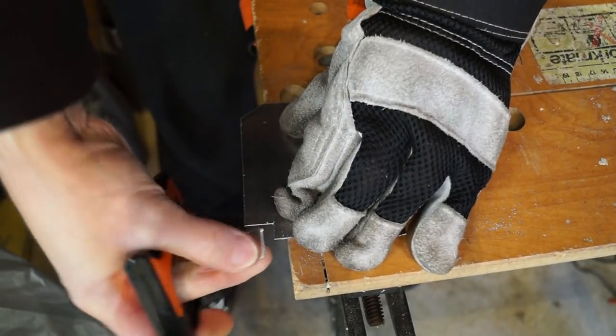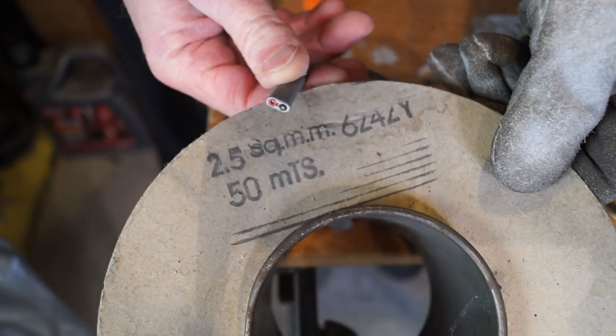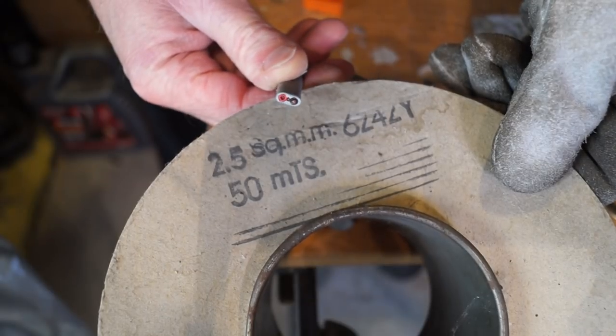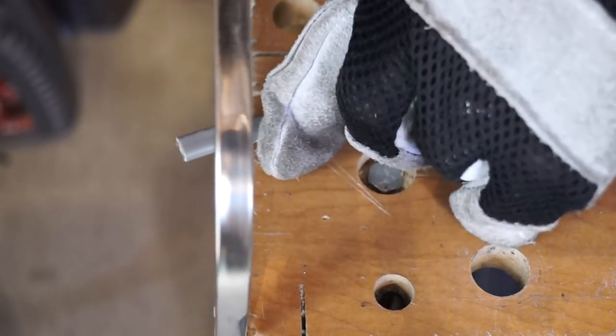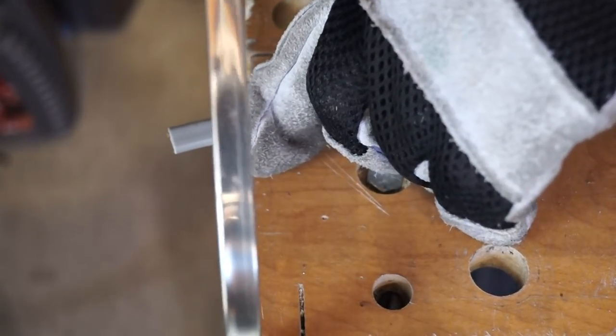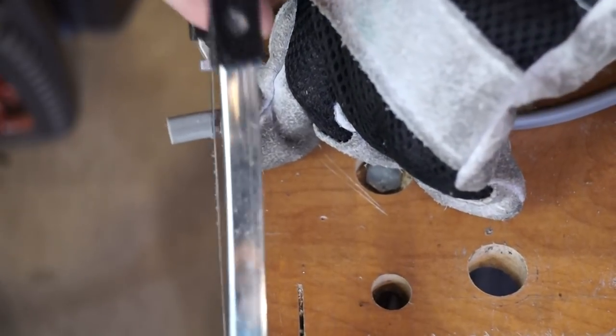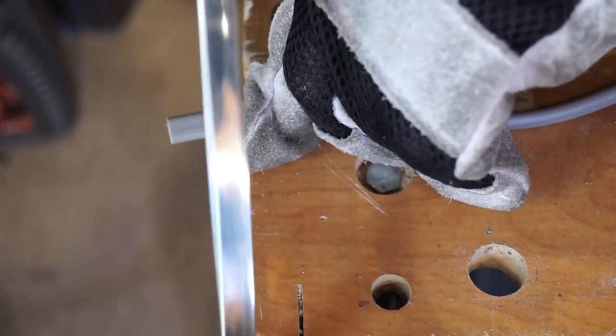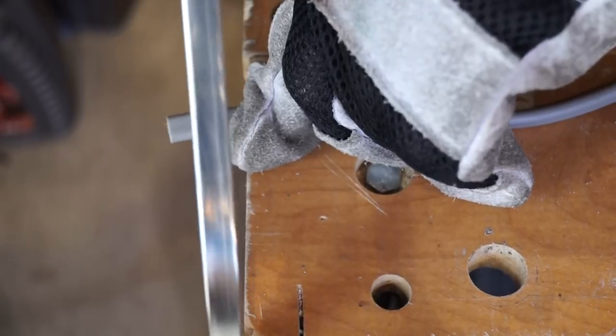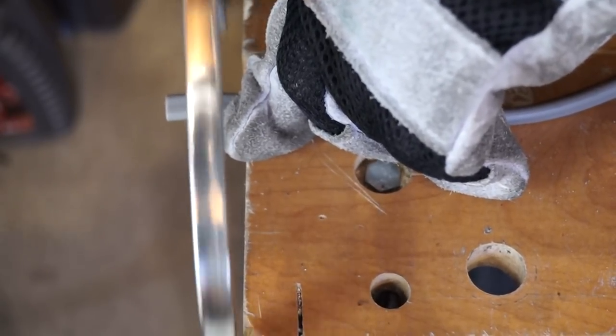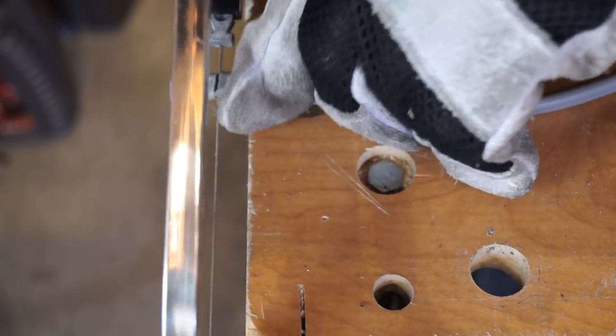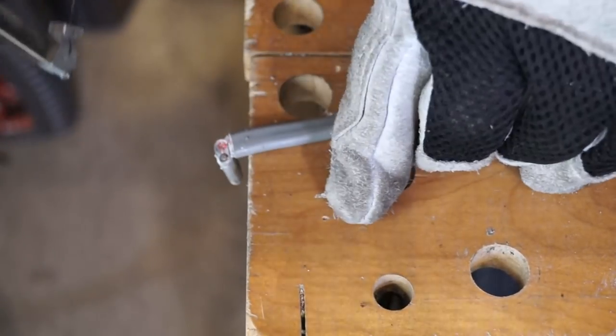So we can do aluminium then. What about some 2.5mm twin and earth then? Let's give that a go, see what we can do. There we go.